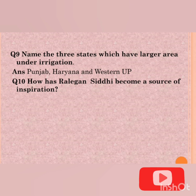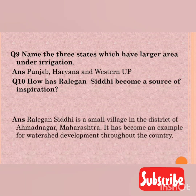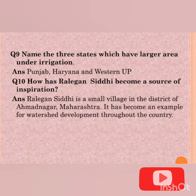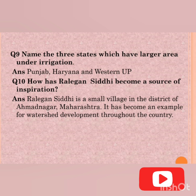Question number ten: how has Raleghan Siddhi become a source of inspiration? The answer is: Raleghan Siddhi is a small village in the district of Ahmadnagar, Maharashtra. It has become an example for watershed development throughout the country. It was a drought-prone area of Maharashtra but is now considered a model of environmental conservation. The village carried out programs like tree planting, reduced soil erosion, digging canals, and the village uses solar power, biogas, and windmills.